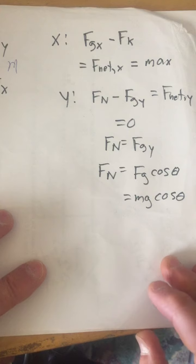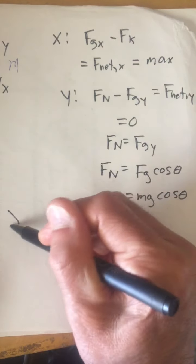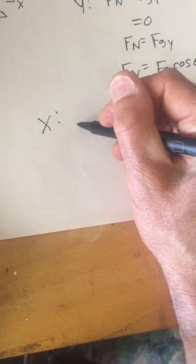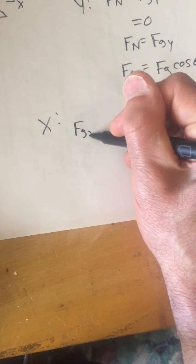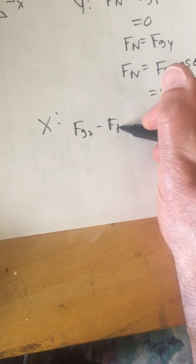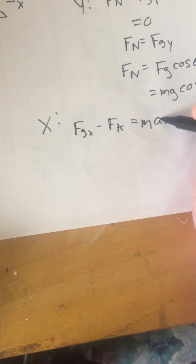Now we're going to use that in the x direction in just a minute. Going back to the x direction for the acceleration, here's what we have. We have that Fgx minus Fk equals the mass times the acceleration in the x direction.